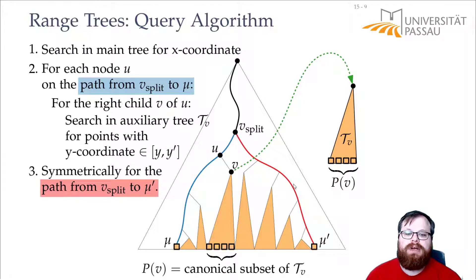And symmetrically we do the same for the red path, so for all of these canonical subsets do our one-dimensional range query.